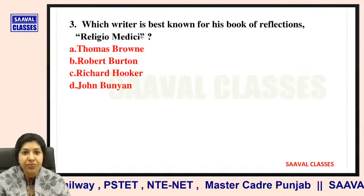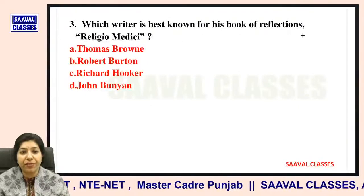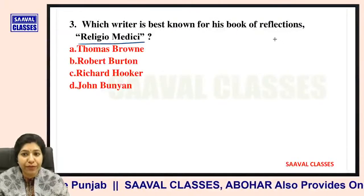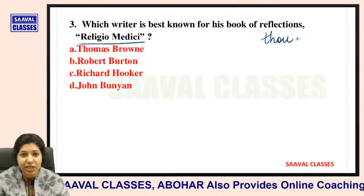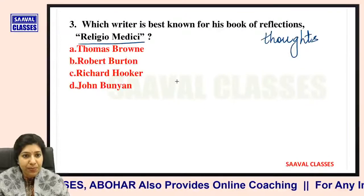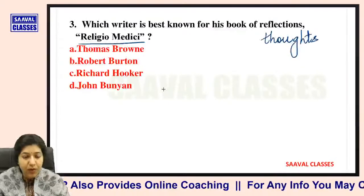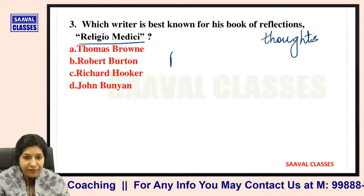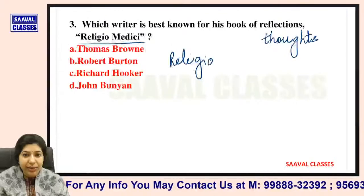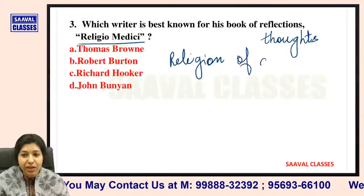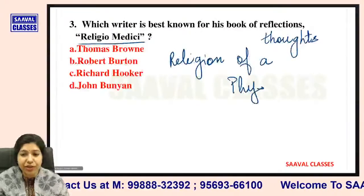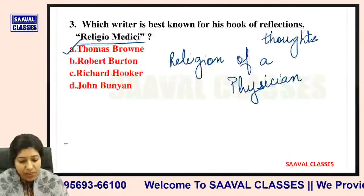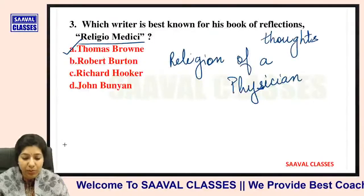Question number three: Which writer is best known for his book of reflections, Religio Medici? Kis writer ko unki book of reflections ke liye jana jata hai? Thomas Brown, Robert Burton, Richard Hooker, or John Bunyan? Religio Medici can be translated as 'Religion of a Physician' — religion of a doctor. The answer is Thomas Brown.